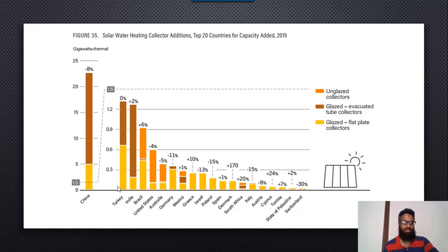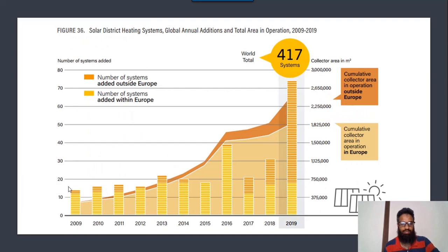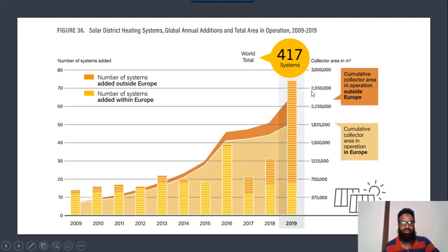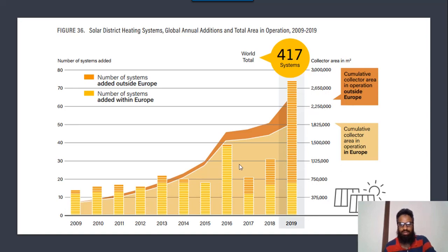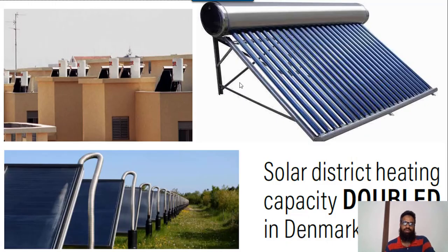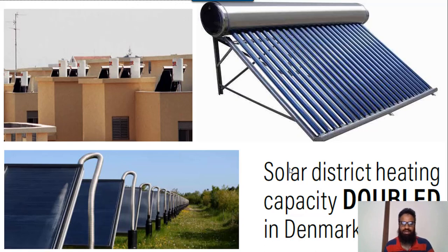The major chunk is produced by China. If you see the solar district heating systems installed in the whole world, the orange part shows the solar water heating systems installed in Europe and the yellow part in the remaining world. Looking at the statistics, the major country using solar heating is Denmark, which almost doubled its capacity in 2016.